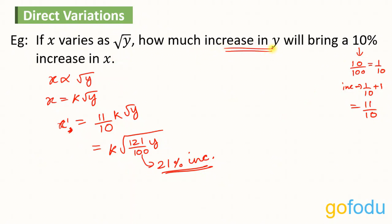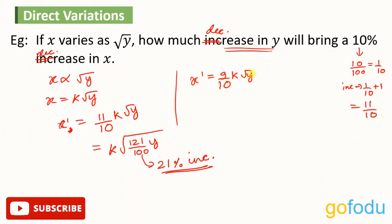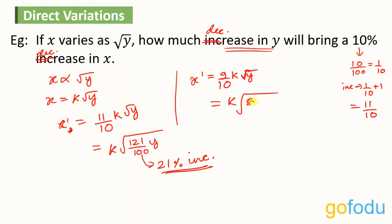Now changing the question: how much decrease in Y will bring a 10% decrease in X? A 10% decrease means a multiplying factor of 9 upon 10. Taking 9/10 inside the root sign gives K times root of (81/100 × Y). A multiplying factor of 81 upon 100 means a decrease of 19% in Y. So a decrease of 19% in Y will bring a 10% decrease in X.